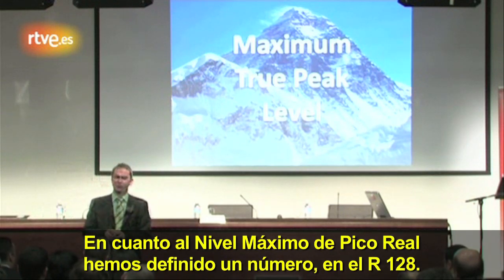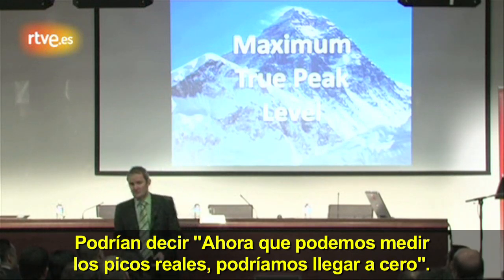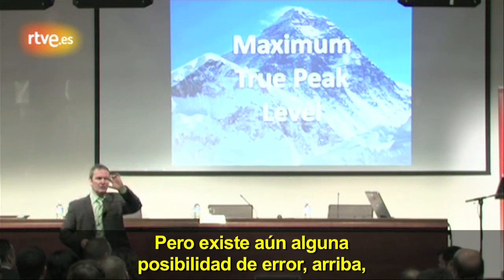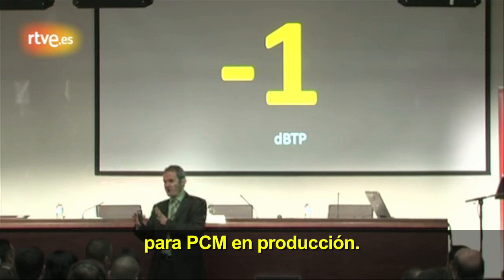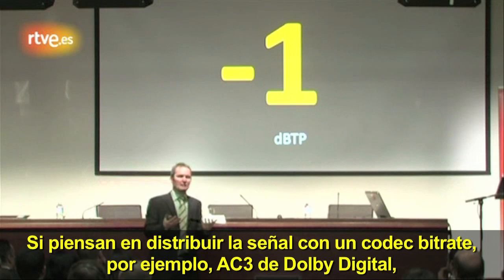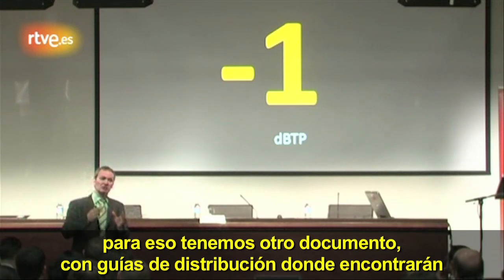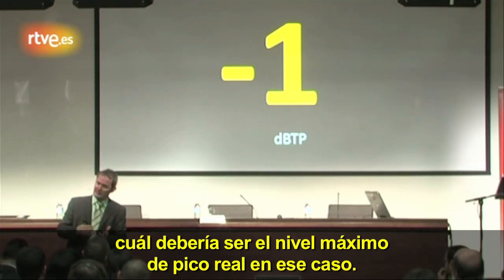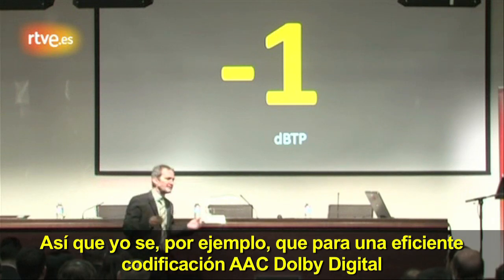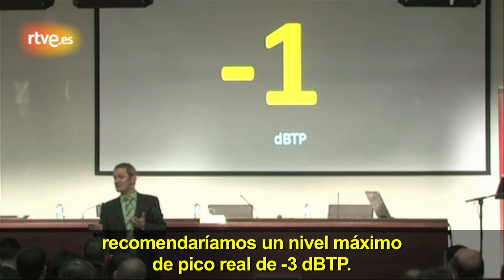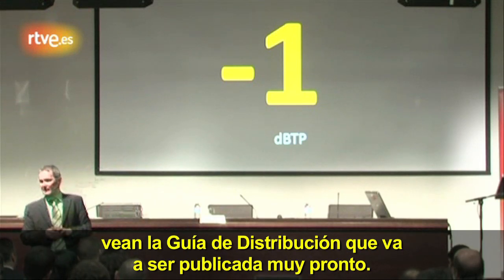As far as the maximum true peak level is concerned, we do define a number in R128. Since we can now really measure true peaks, we could go up to zero, but there is still some error possibility, so we define minus 1 dBTP as the maximum allowed true peak level for PCM in production. If you then distribute your signal with a bitrate codec — for instance AC3 or Dolby Digital — there are distribution guidelines documenting what your maximum true peak level should be. A bitrate codec needs a little more headroom to avoid additional distortion. For high-efficiency AAC and Dolby Digital, we recommend minus 3 dBTP as the maximum true peak level.